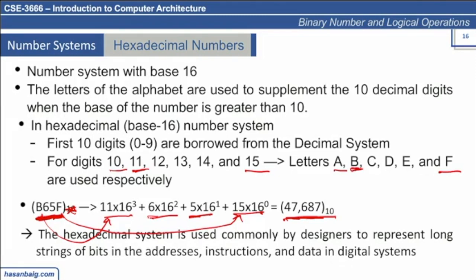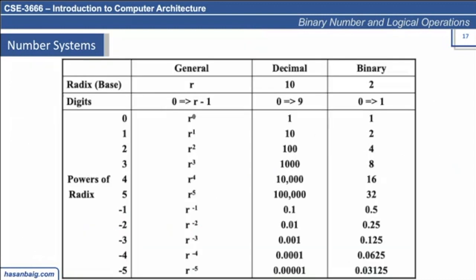So the number systems we have discussed are decimal, binary, octal, and hexadecimal. This chart shows the rising powers — you don't need to memorize it, but you will mostly be dealing with binary. Starting from right to left, the first bit value is 1, then 2, 4, 8, 16, 32 — you will gradually memorize it yourself. On the right-hand side of the decimal point: 2 to the power minus 1 is 0.5, then 0.25, 0.125, and so on.